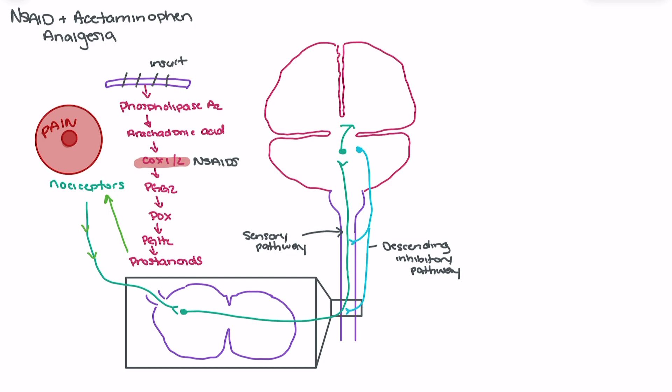Alternatively, when we're looking at something like acetaminophen, acetaminophen acts on the POX pathway. So acetaminophen interferes here and prevents further progression through the pathway to create prostanoids.